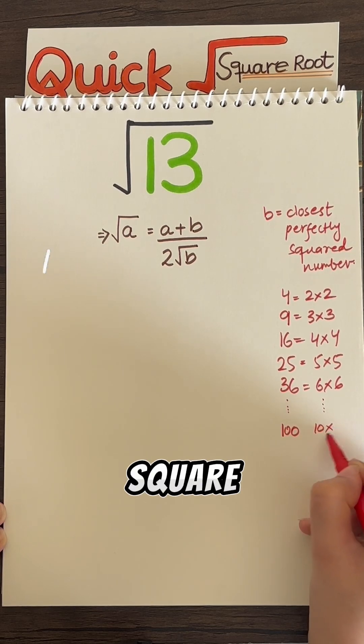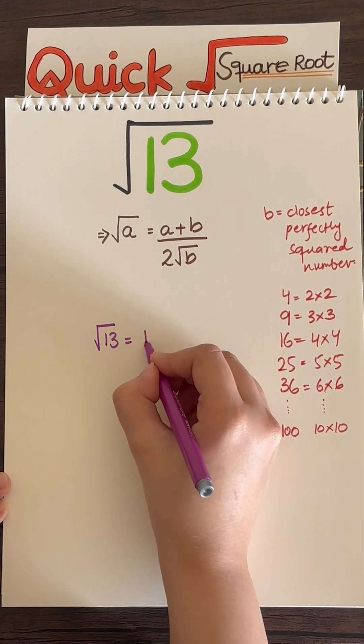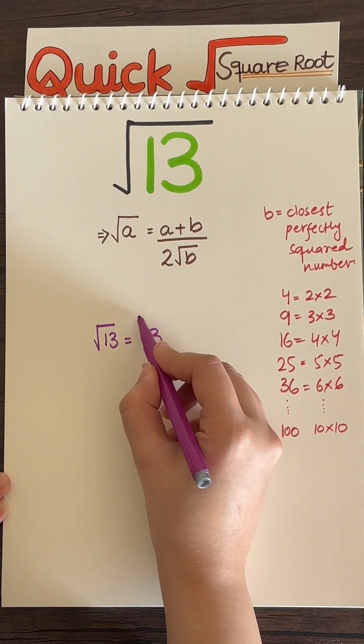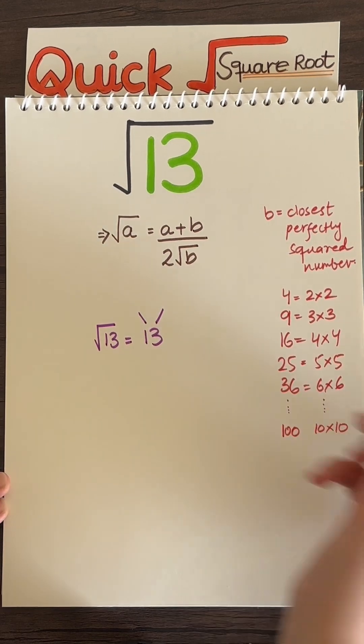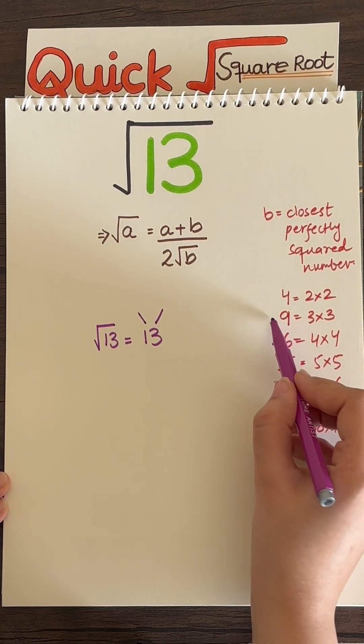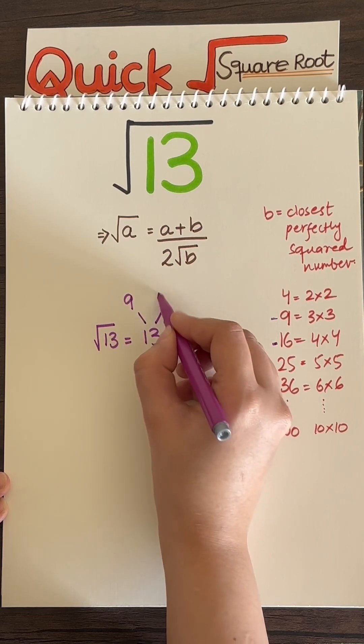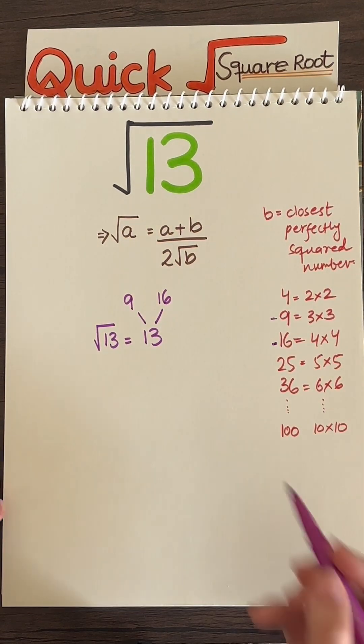So let's give it a try and find the square root of 13. First, let's copy down 13, and now what is the closest perfectly squared number? 16, which is 4 by 4, is pretty close, and so is 9. So write these two numbers here and see which one 13 is close to.